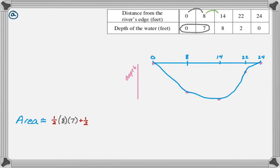From there, we're just going to keep going through. Plus one half—we'll go from eight to 14, which is six, and the sum of these bases is 15. Plus one half—we're going from 14 to 22, which gives us eight, and the sum of the bases is going to be 10. And then finally, one half times two, and the sum of the bases is two.